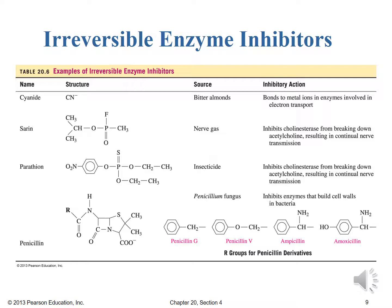Table 20.6 shows examples of irreversible enzyme inhibitors. Cyanide, CN-minus, smells of bitter almonds and is found in things like cherry pits. It inhibits by bonding to metal ions in enzymes involved in electron transport — those oxidoreductases discussed in the previous lecture. If you can't catalyze oxidation or reduction reactions in the body, you won't live very long, which is why cyanide poisoning is so dangerous.